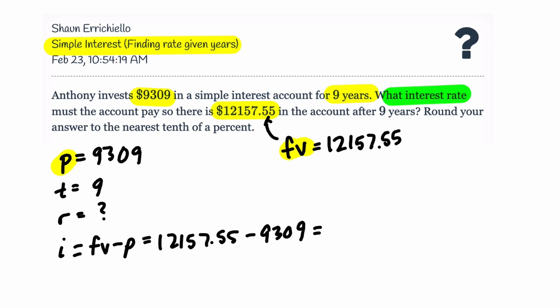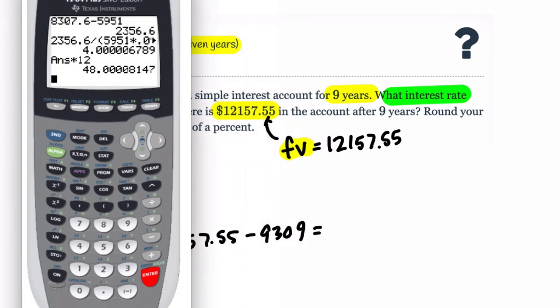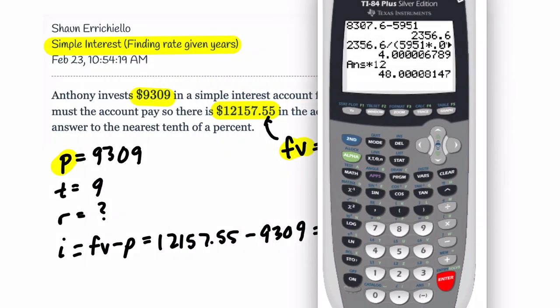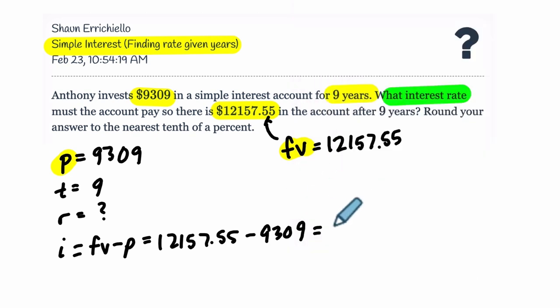And that will tell us how much interest is in the account. Okay, or has been added to the account. So here we go. So $12,157.55, yep, minus $9,309, 2848.55. So $2,848.55. That is our interest.